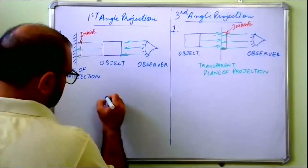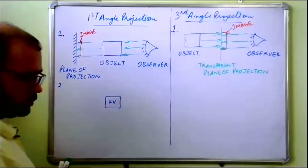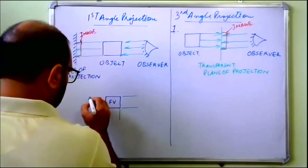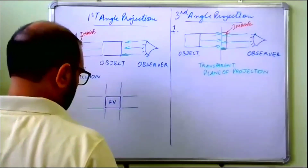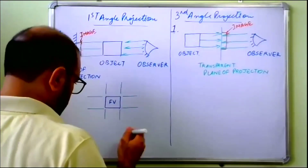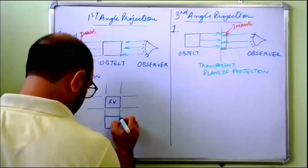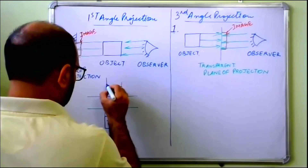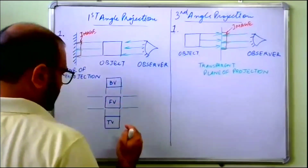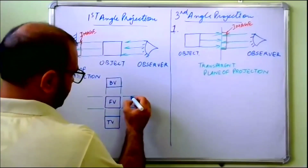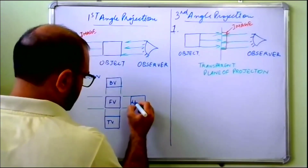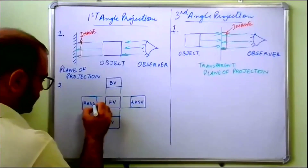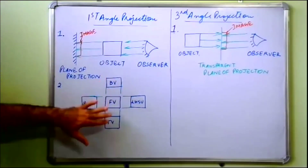In first angle projection, the top view is drawn below the front view, the bottom view is drawn at the top, the left-hand side view is drawn at the right, and the right-hand side view is drawn at the left — all views are in projection of each other.